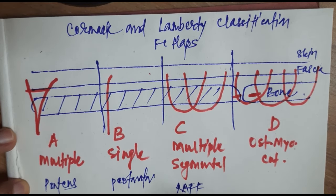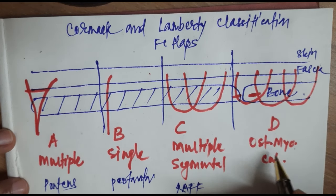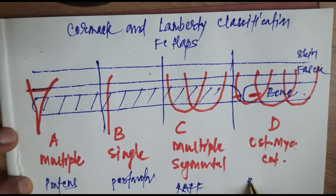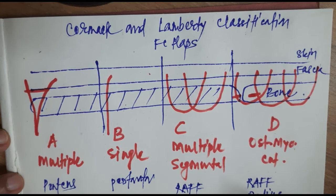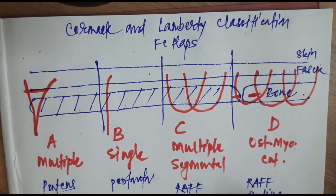And type D, again radial artery forearm flap with radius, so that makes it an osteomyofasciocutaneous flap or osteofasciocutaneous flap. So this is the Cormack and Lamberti classification of fasciocutaneous flaps. Thank you.